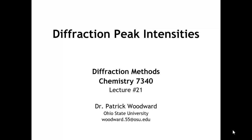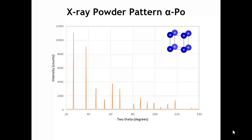Up until now, we've been focusing on the angles at which constructive interference can occur, which leads to diffraction of X-ray radiation. As we have learned, that tells us about the size and shape of the unit cell — the translational symmetry of our crystal. But if we want to say anything about where the atoms are located within the unit cell, then we have to analyze the intensities of the diffraction peaks.